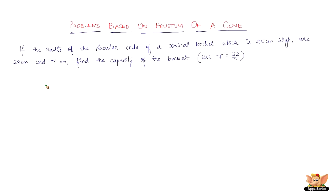In this video, let us solve problems based on frustum of a cone. Here we've got a problem which reads: if the radii of the circular ends of a conical bucket, which is 45 cm high, are 28 cm and 7 cm, find the capacity of the bucket. Use pi equals 22 by 7.